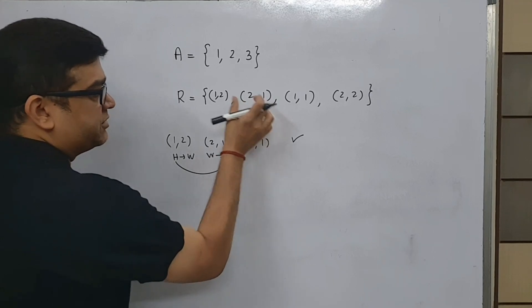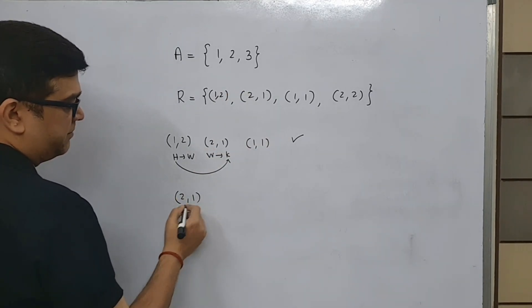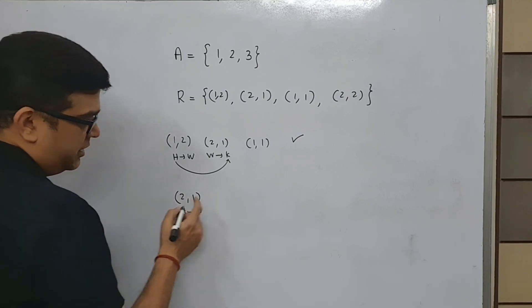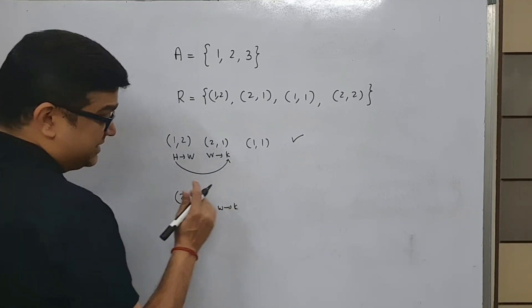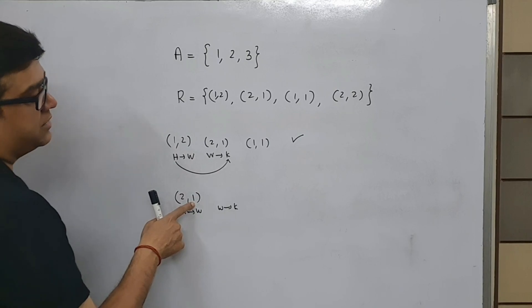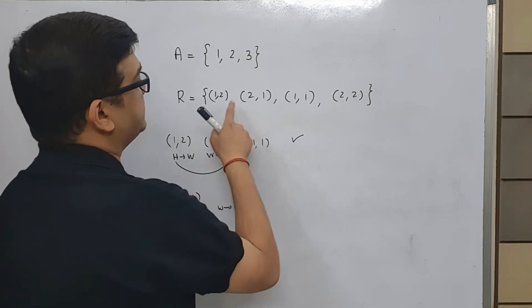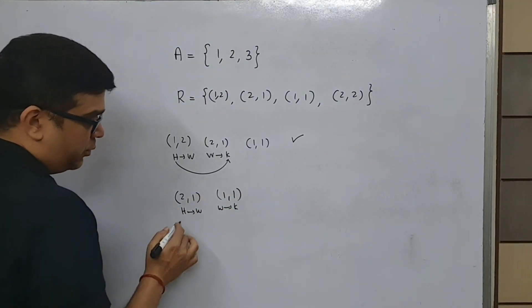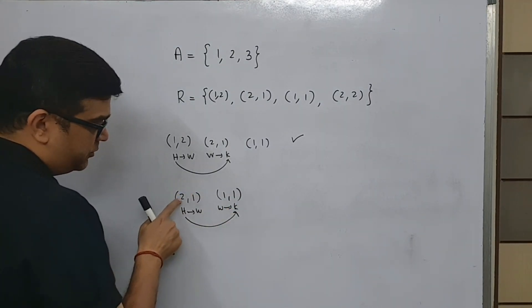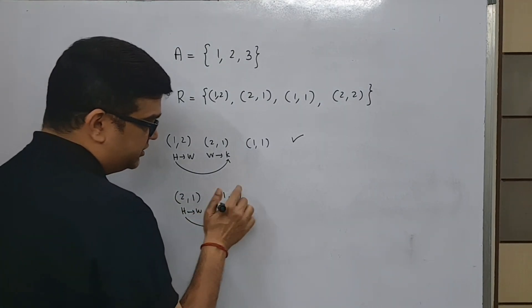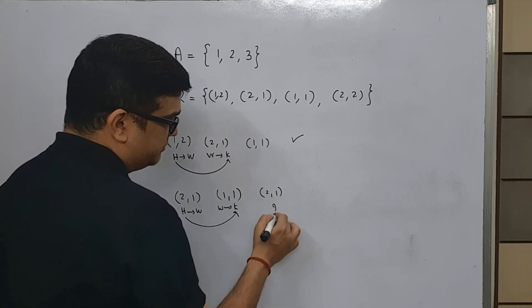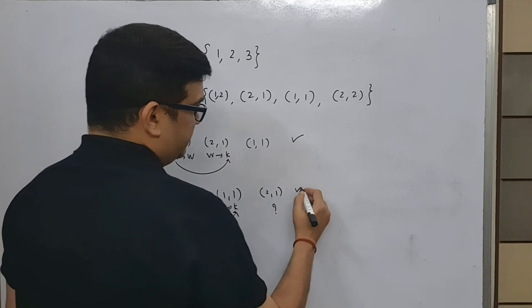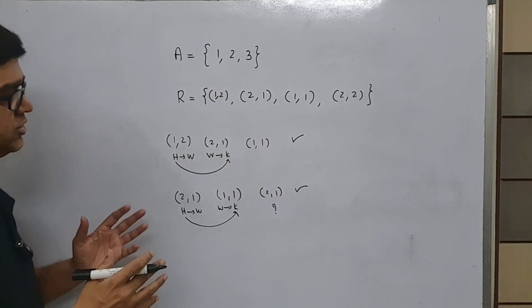Now let us pick the element (2,1). This is like husband related to wife. Now check whether wife has a kid — whether 1 is related to something. Yes, 1 is related to 1. Now check whether husband accepts the kid — whether (2,1) is present. Let us see: yes, (2,1) is present. Therefore this is also saying it is transitive.